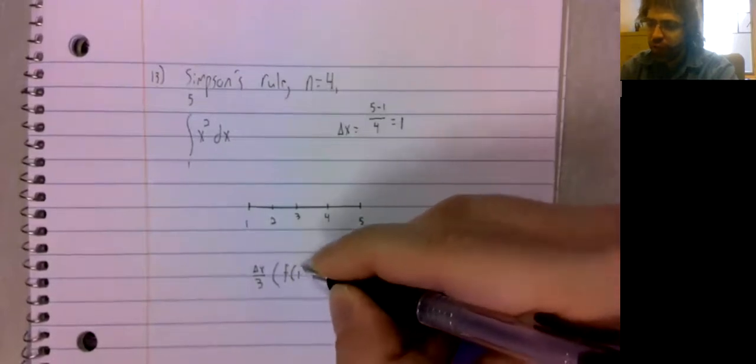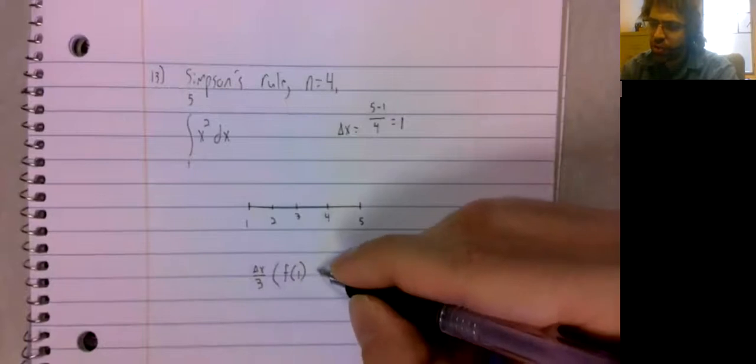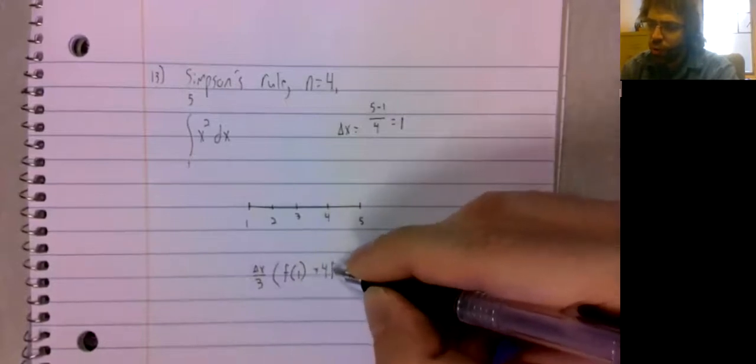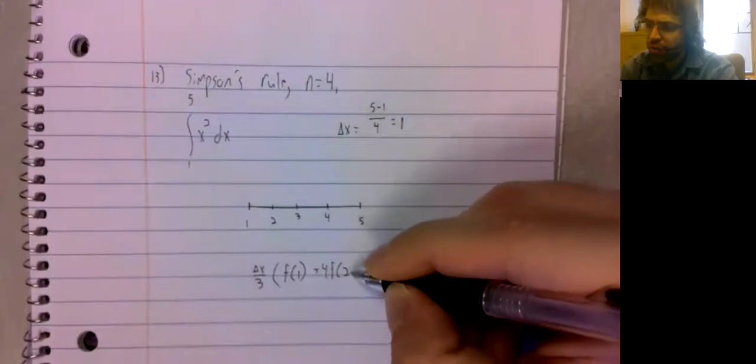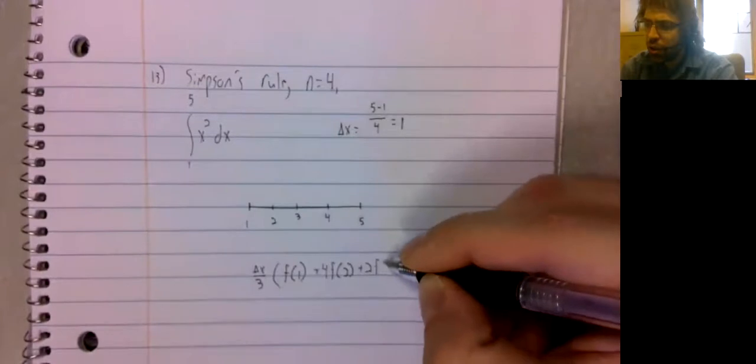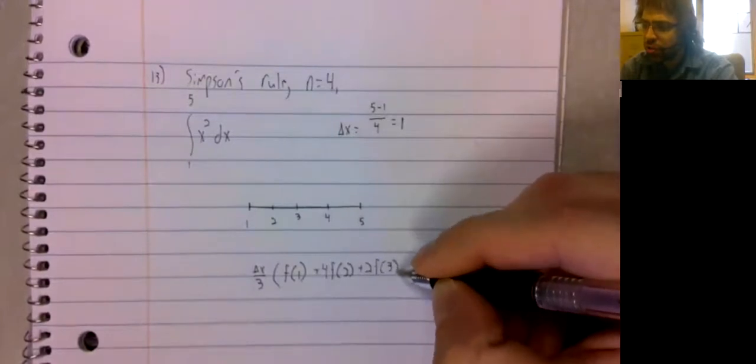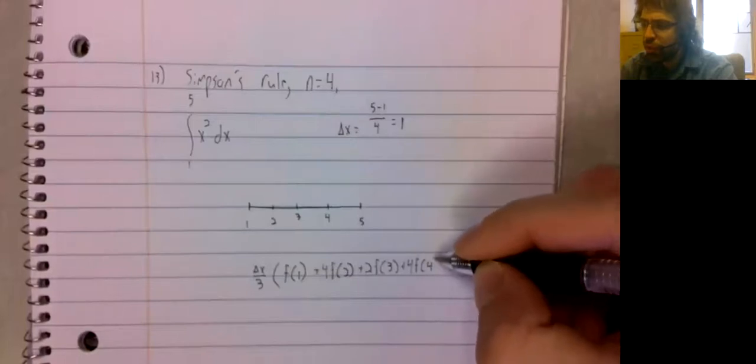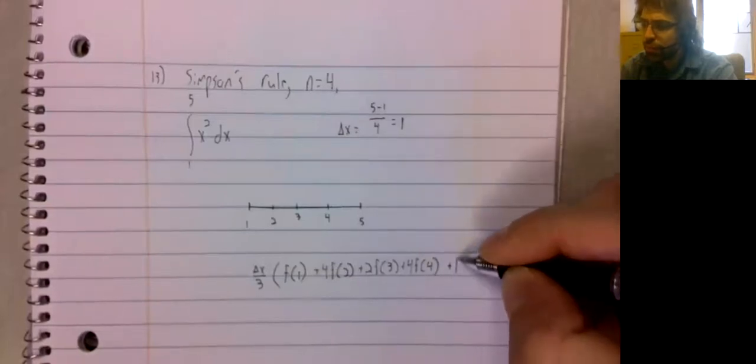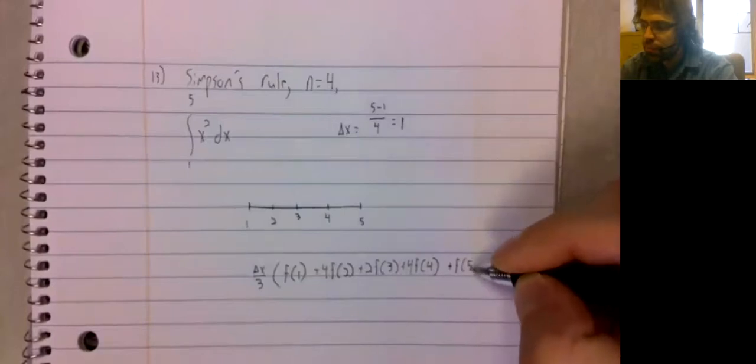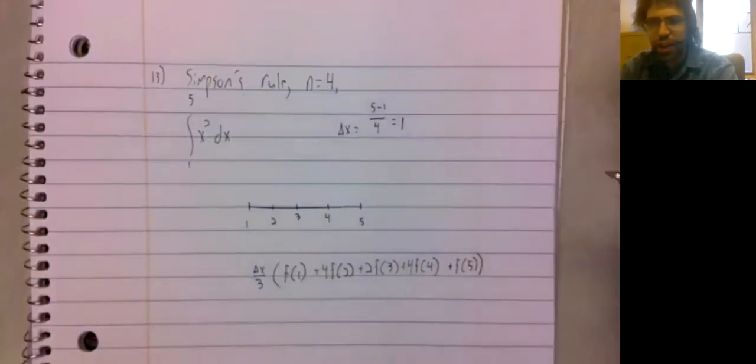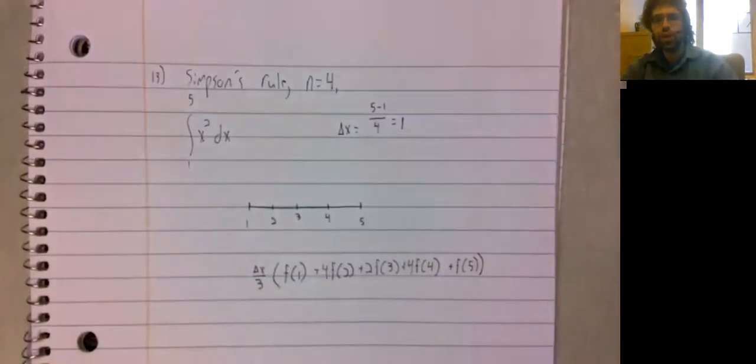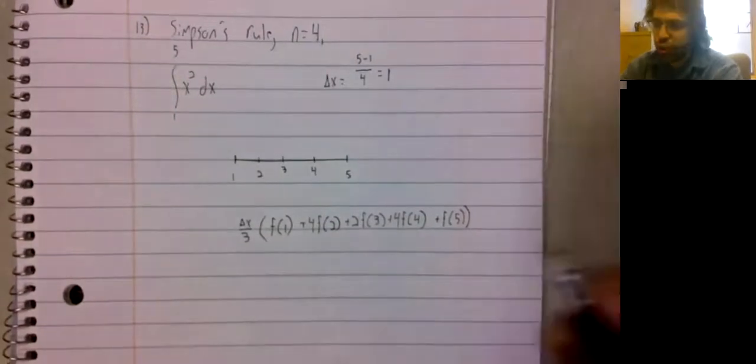Then f of the first point, plus four, f of the second point. And we alternate between two and four, except for the last value, which does not have any number in front of it.